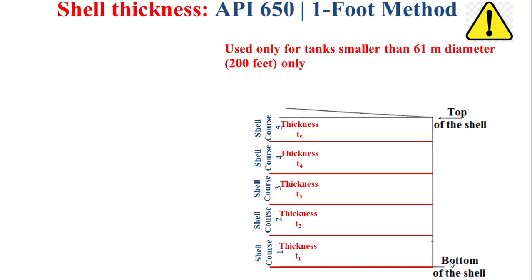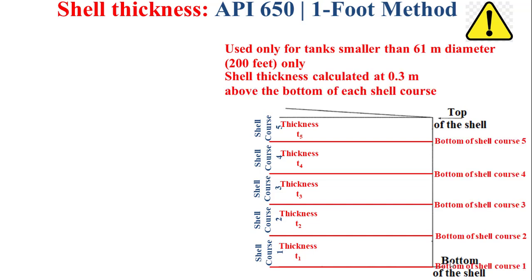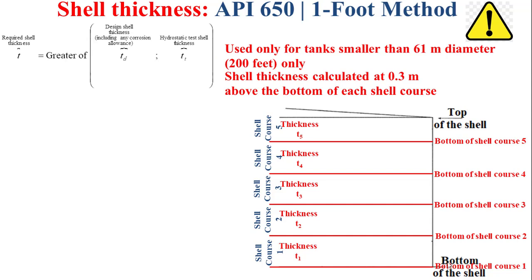The shell thickness calculated by the one-foot method is determined at 0.3 meters above the bottom of each shell course.